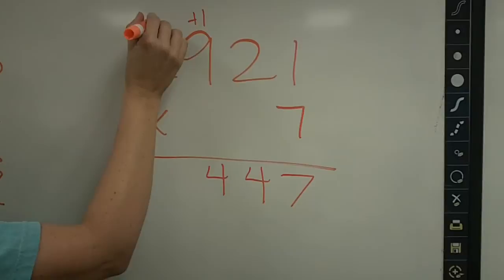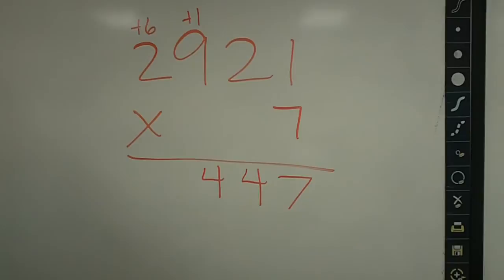And 7 times 2 is 14, plus 6, 15, 16, 17, 18, 19, 20, 21.